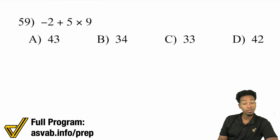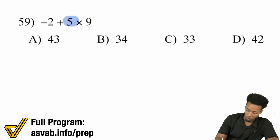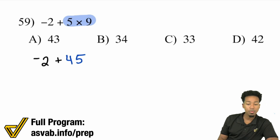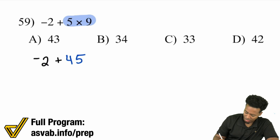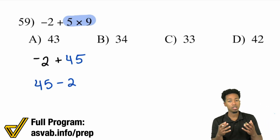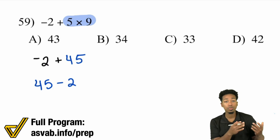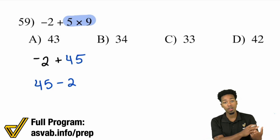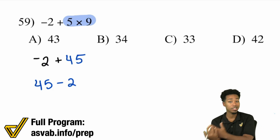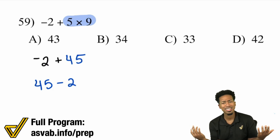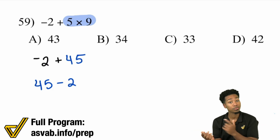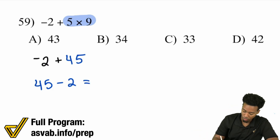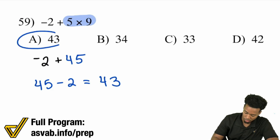Number 59: negative 2 plus 5 times 9. What we'll do first is that multiplication — 5 times 9, which is 45. So we have negative 2 plus 45. Remember that negative 2 plus 45 is the same exact thing as saying 45 minus 2. You can rearrange things — 1 plus 2 is the same as 2 plus 1. So 45 minus 2 is going to be 43.